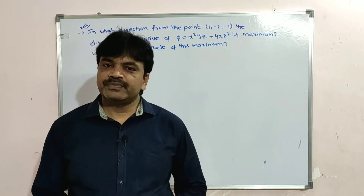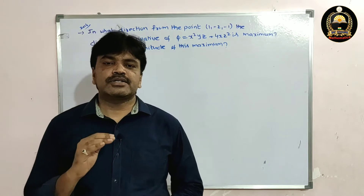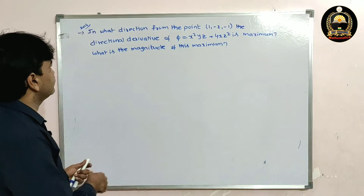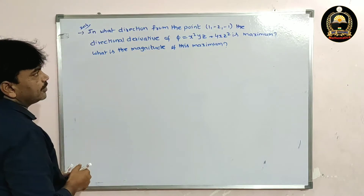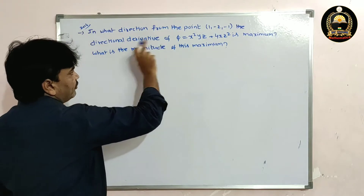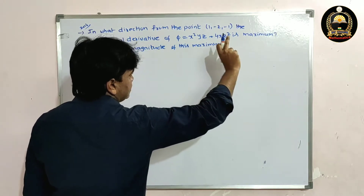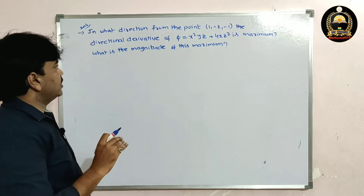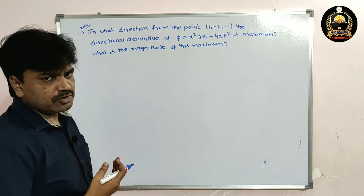Good morning friends. In this lecture I'm going to solve a problem on directional derivative. The problem is: in what direction from the point (1, -2, -1) is the directional derivative of φ = x²yz + 4xz² maximum?